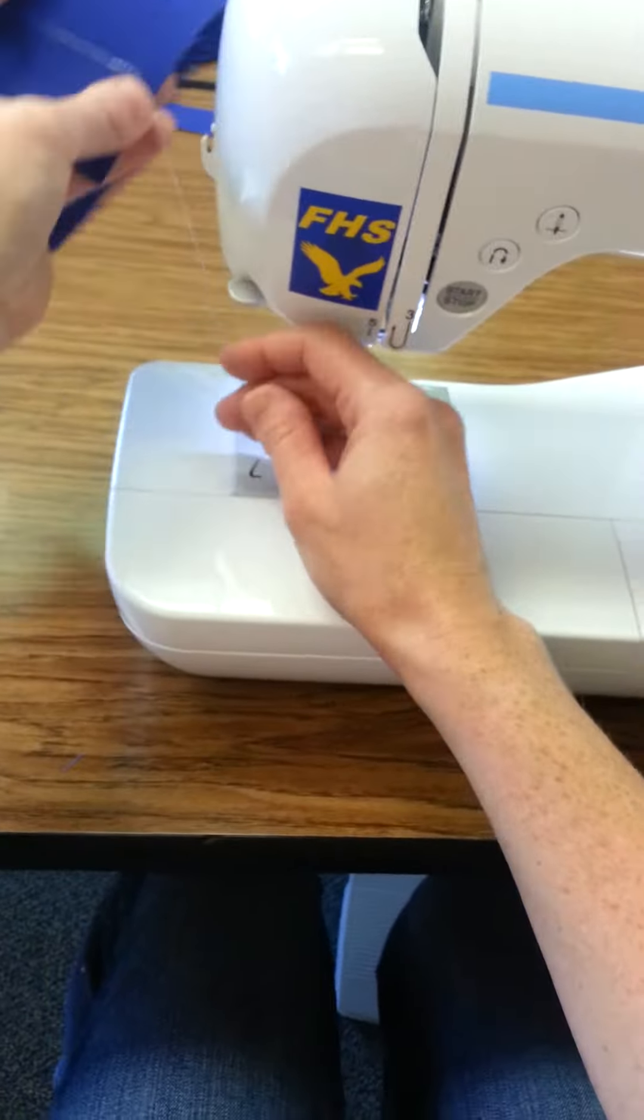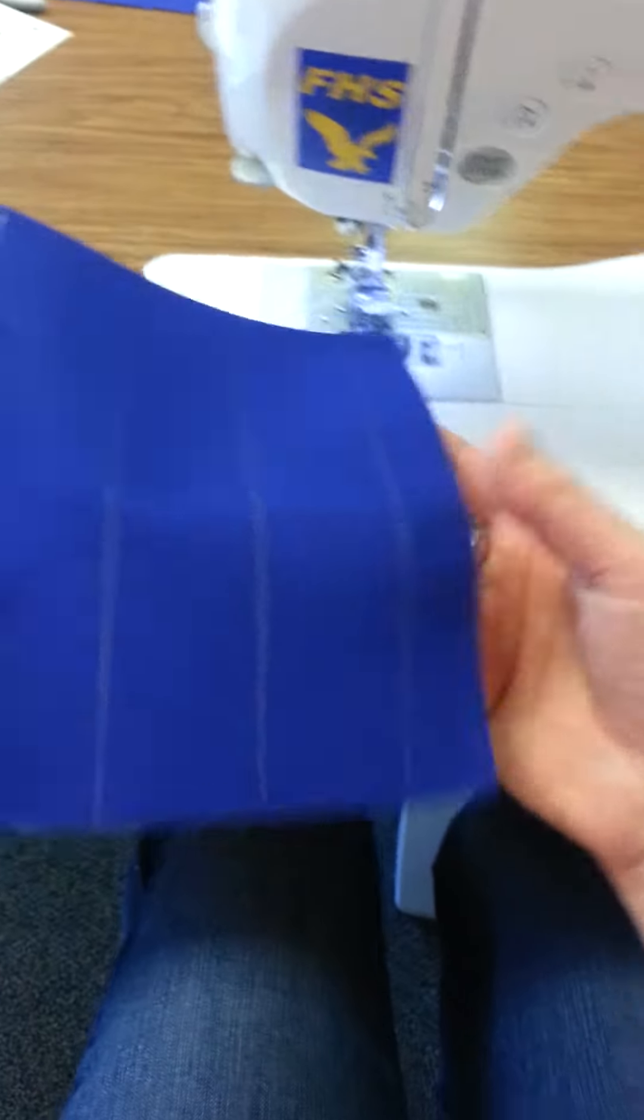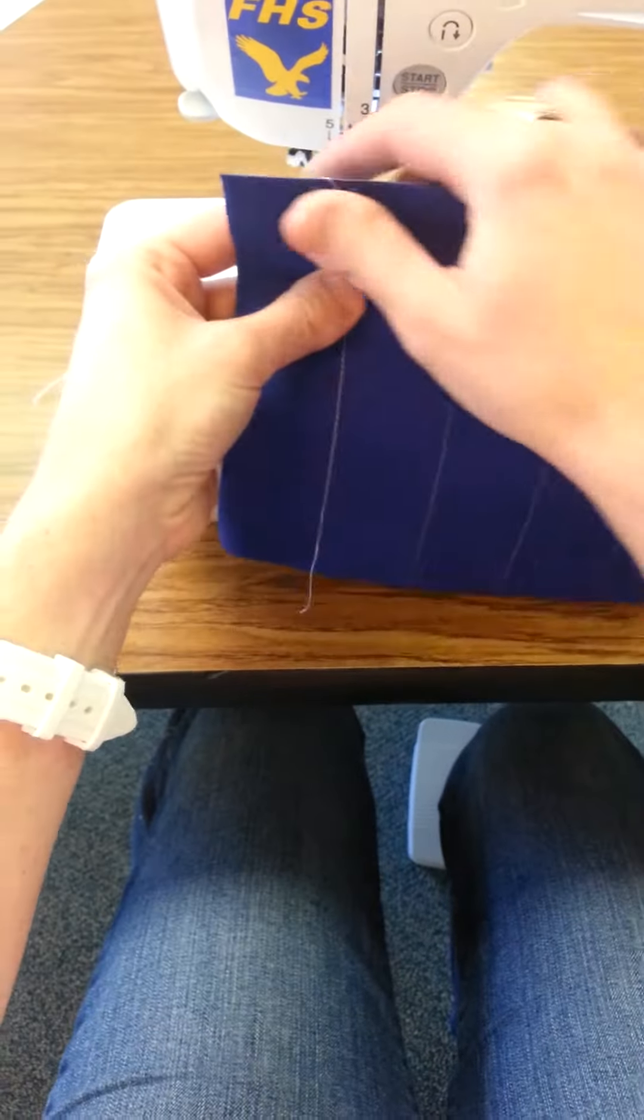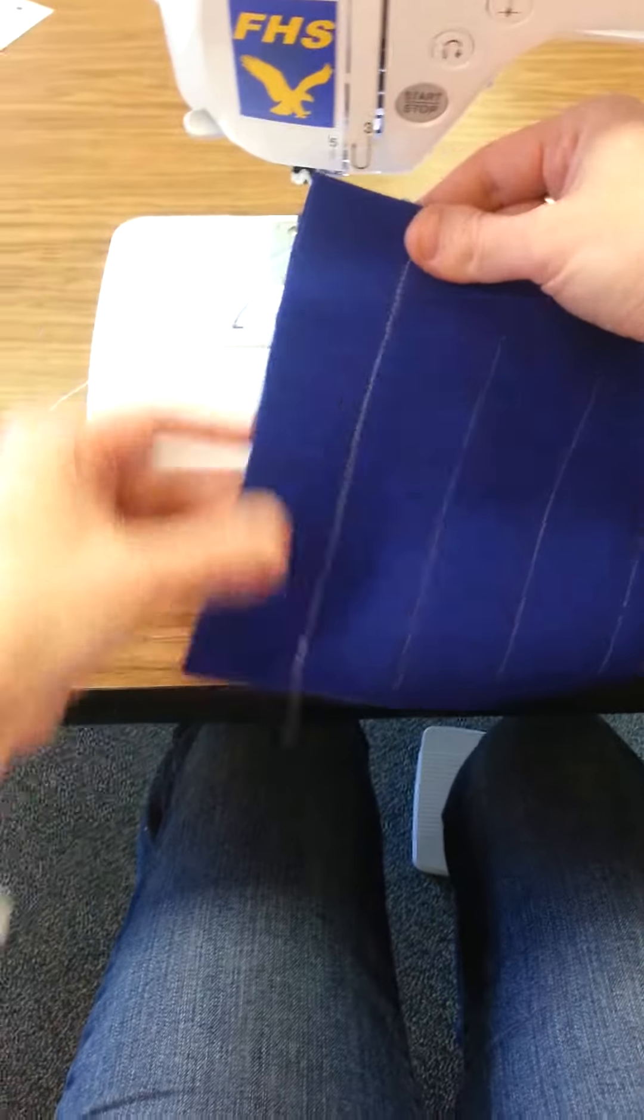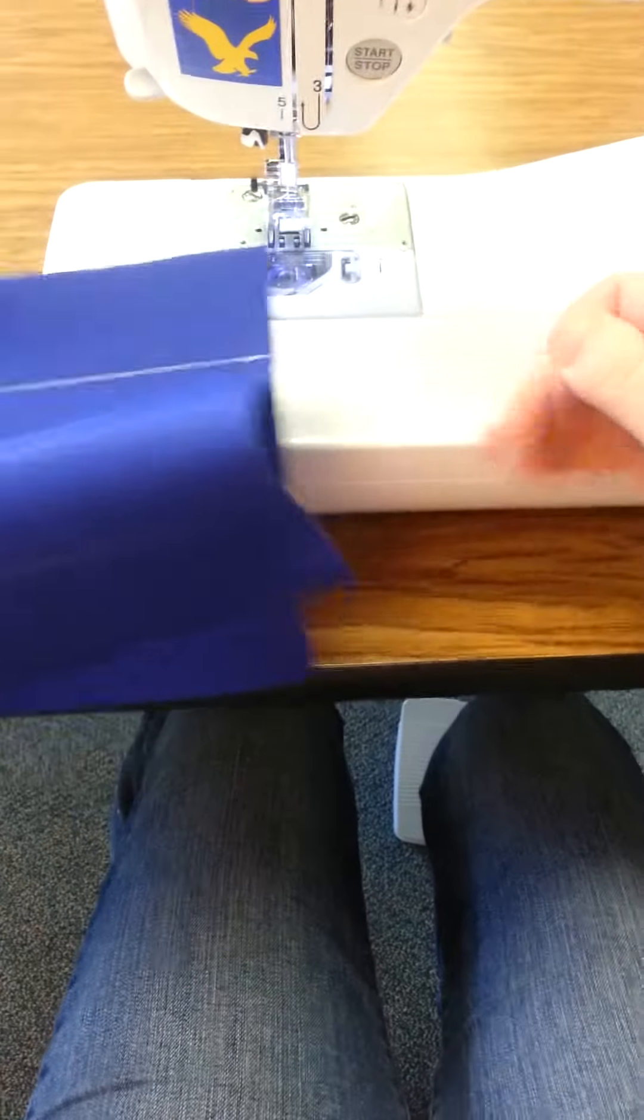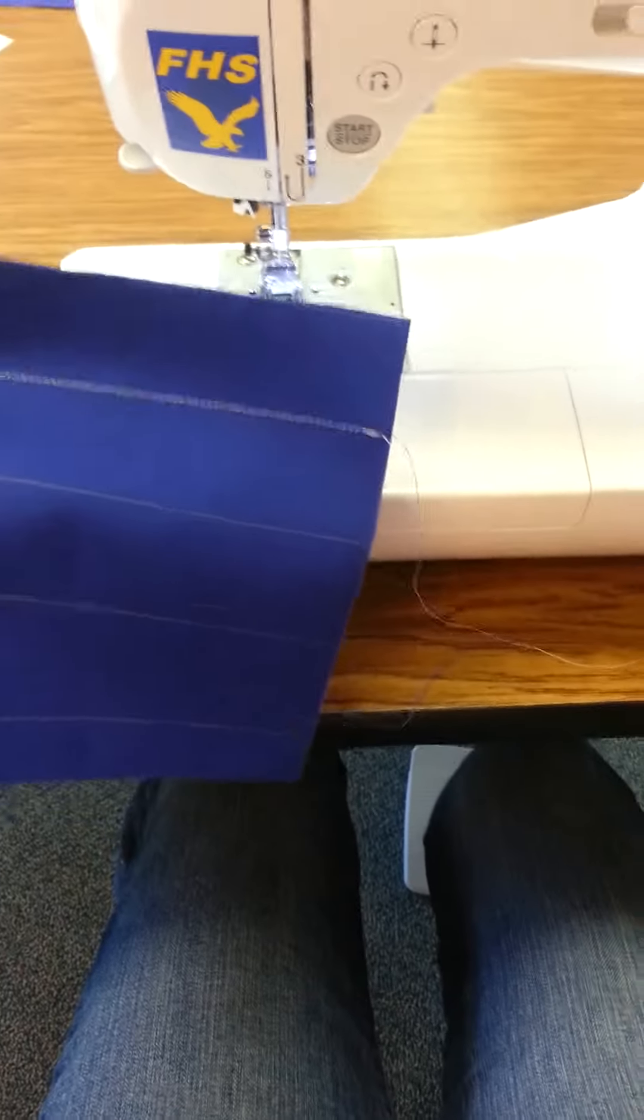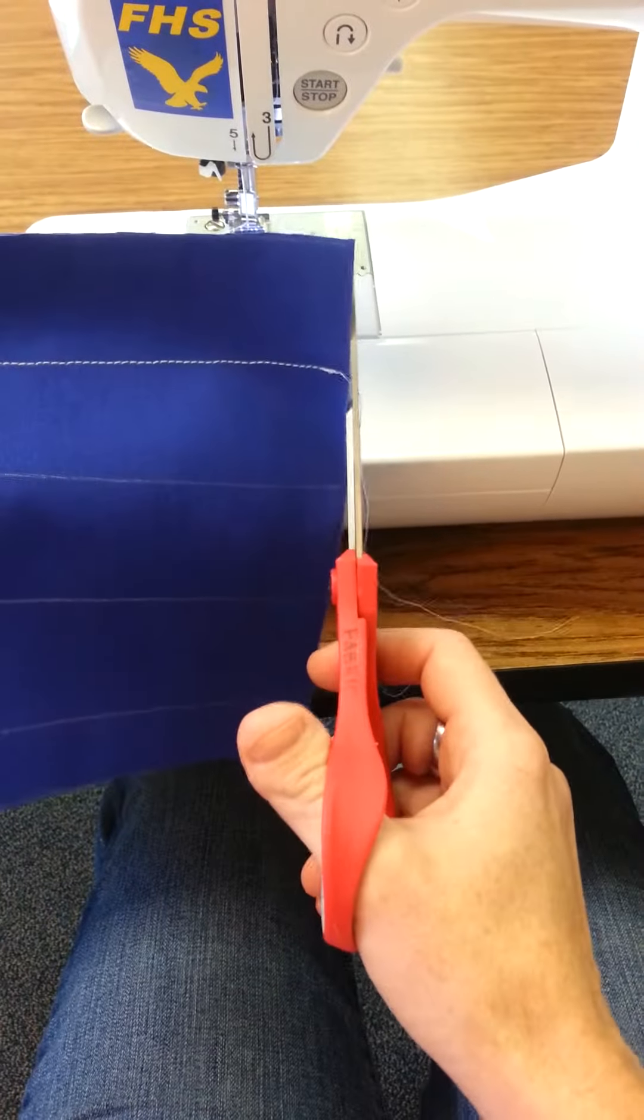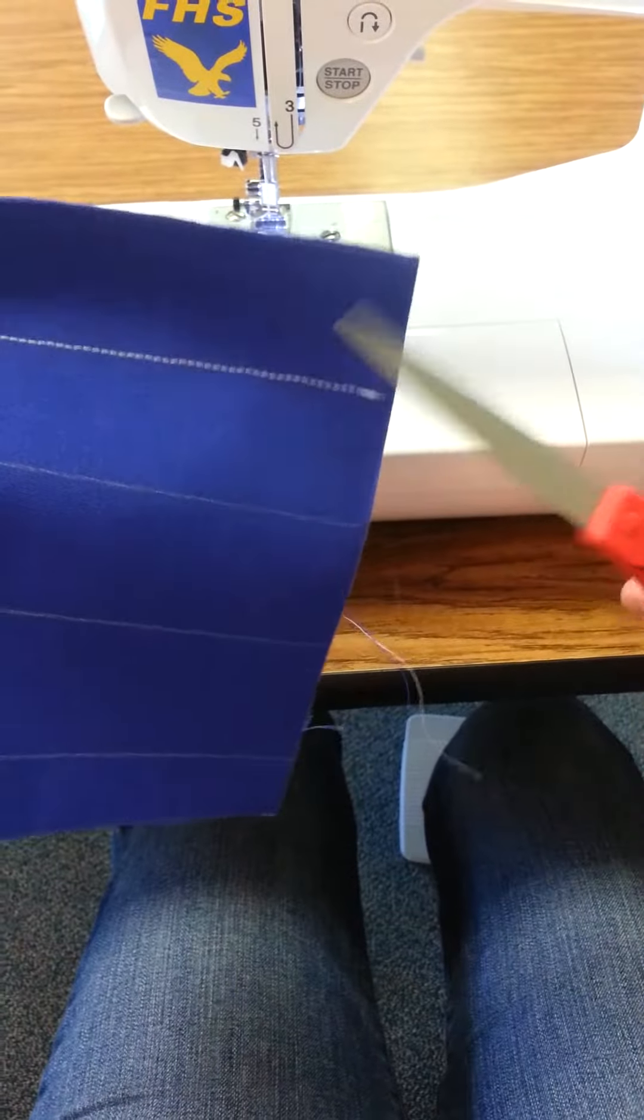Go ahead and, there's a cutter on the side of the machine you can use to cut the threads. And go ahead and look at your stitch line - should be nice and right on the line. The back looks good. Go ahead and cut your threads right to the edge of the fabric or right to the edge of the stitch line.